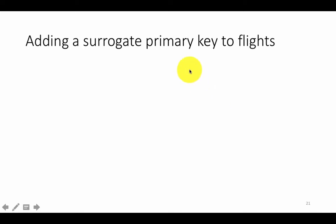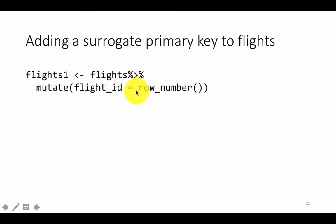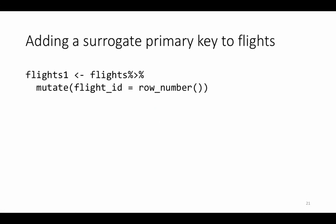In these cases, sometimes you may want to add a surrogate primary key. You can do that by just adding another field — taking the row number and making it into a primary key. So I'm creating a new field called flight_id and simply putting the row number into that field. Obviously, the row number is going to be unique, and now you have an actual primary key for this table. That's what we call a surrogate primary key.